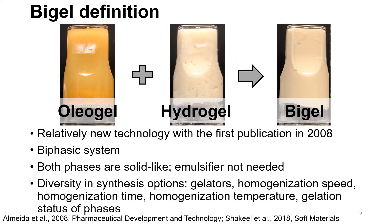Bi-gel may be a new term for many of you, and this makes sense because the first publication mentioning one only came out in 2008, about 12 years ago. A bi-gel is a biphasic system, meaning that it has two phases. What differentiates it from other biphasic systems, such as an emulsion, is the fact that both of its phases are structured. Your structured oil phase is called an organogel, or oleogel if edible, and your structured water phase is called a hydrogel. Together, these can be homogenized to make a bi-gel.